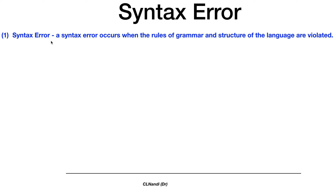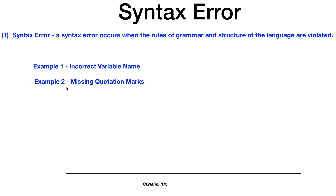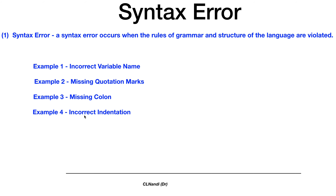Let us look at the syntax error. A syntax error occurs when the rules of grammar and structure of the programming language are violated — you are well advised to memorize the definition. We will look at five examples: example one, an incorrect variable name; example two, missing quotation marks; example three, a missing colon; example four, incorrect indentation; example five, missing parentheses. These are not the only syntax errors, but they are common types.